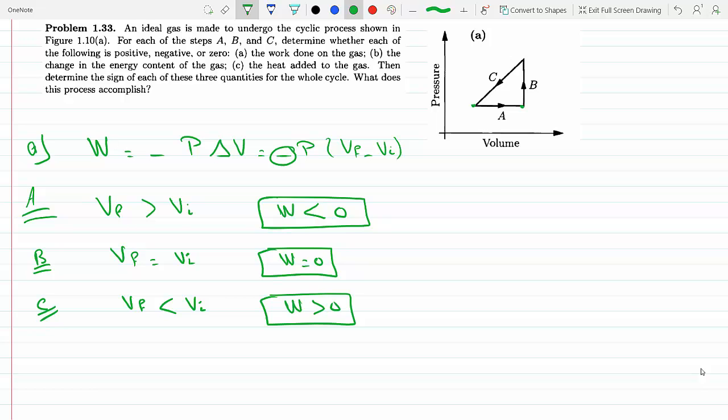Okay, let's go to the change in energy content of the gas. So, change in energy content. This is the change in the internal energy, right? What's that proportional to? That's proportional to the temperature of the system, right? Because we have PV equals NKT.